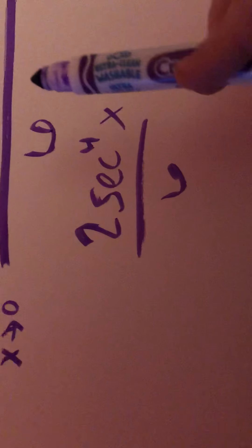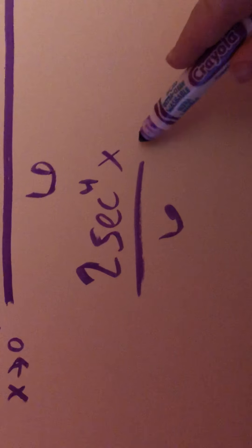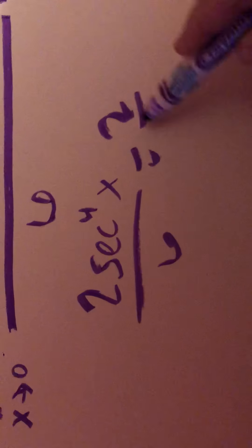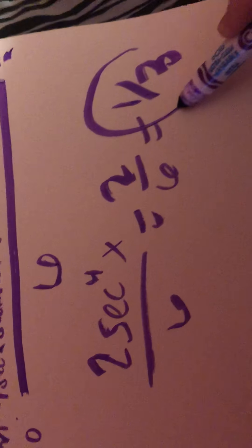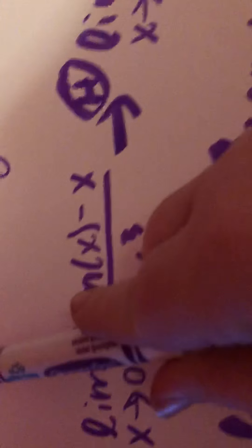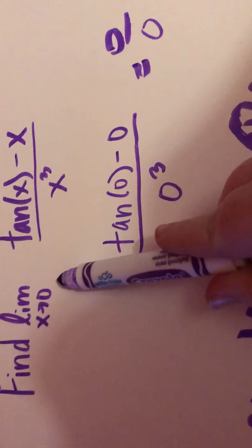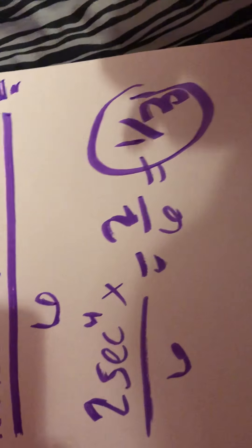Secant to the 4th of 0 is simply 1, so we get 2 over 6, which equals 1 third. So the limit as x approaches 0 for tan of x minus x over x cubed is 1 third.